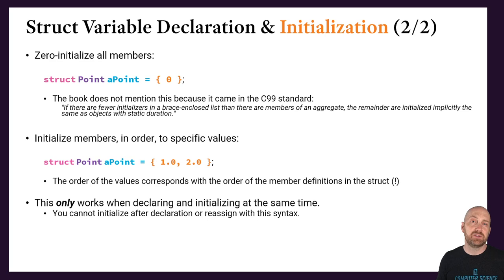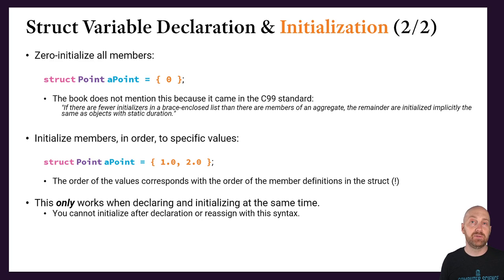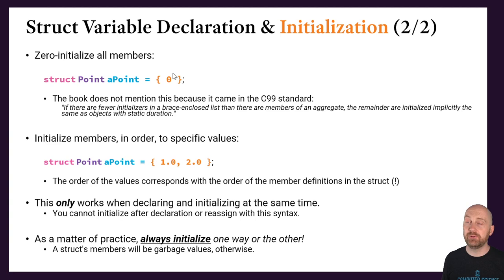This initialization syntax only works when you are declaring and initializing on the same line. If you're declaring at one point and trying to initialize later, or overwriting all members of a struct at once, you can't use this syntax. Always initialize, and if you don't know what to initialize to, just zero them out with {0} — make that your default. If you do have specific values, use the initialization list in curly braces in the order that the members were declared.